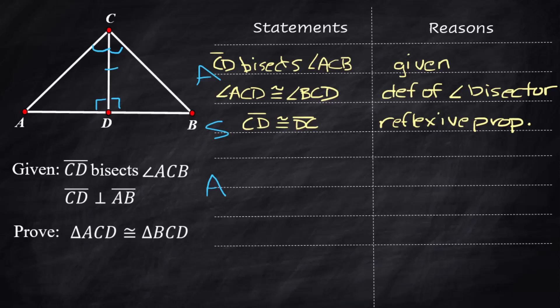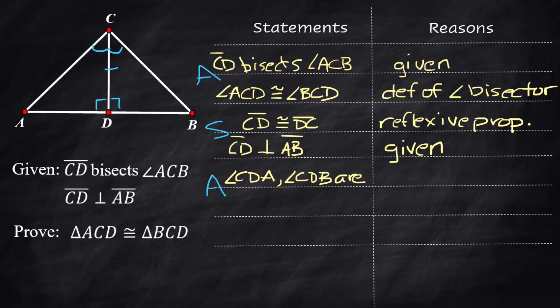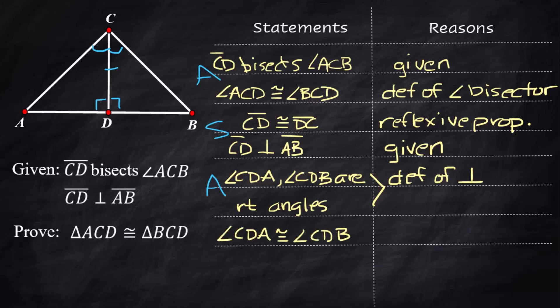Now for the last angle — this takes a couple of steps. CD is perpendicular to AB — that's given. When you have perpendicular lines, you form two right angles, so angles CDA and CDB are both right angles by the definition of perpendicular. Then you must state that angle CDA is congruent to angle CDB because all right angles are congruent.